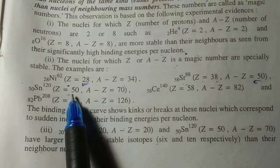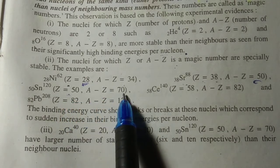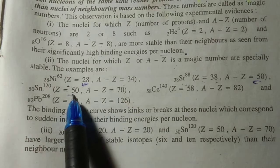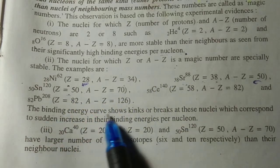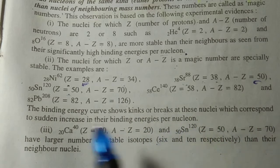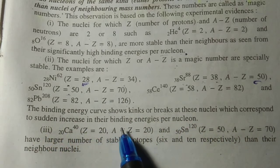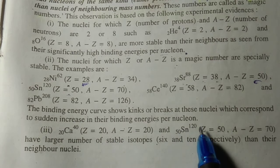Examples include Nickel-62, where Z equals 28 and A minus Z equals 34, so 28 is the magic number for protons. Strontium-88 has Z equals 38 and A minus Z equals 50, where 50 is the magic number for neutrons. Tin-120 has Z equals 50 and A minus Z equals 70, where 50 is the magic number for protons. The binding energy curve shows kinks and breaks at these nuclei which correspond to sudden increases in their binding energy per nucleon.